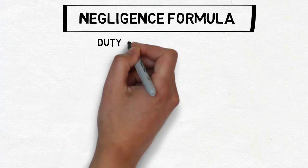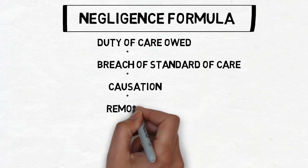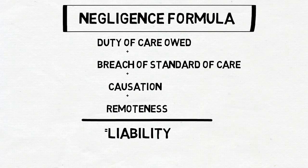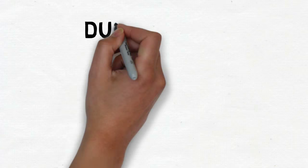Now, we'll look at the negligence formula. For someone to be found liable, the following factors need to be present: there needs to be a duty of care owed, breach of standard of care, causation, and remoteness. If you have all those, then you have liability. But keep in mind that there may be contributory negligence involved.